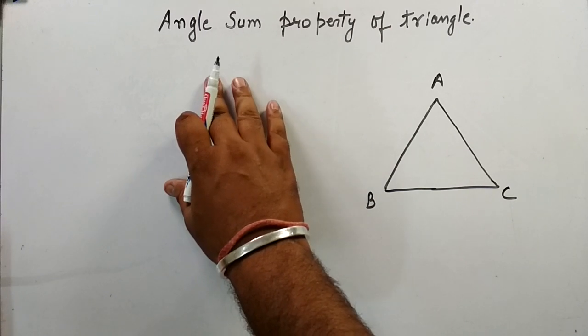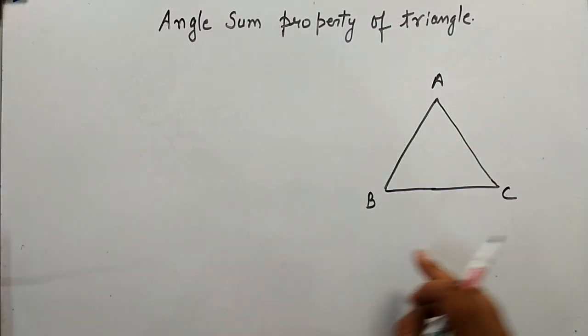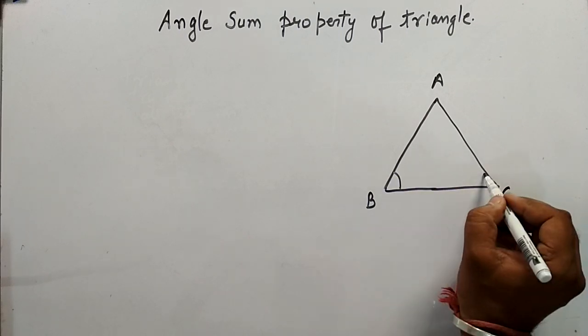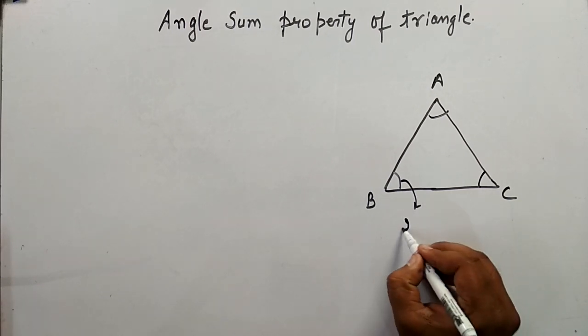So what is the angle sum property of a triangle? In this triangle ABC, if you look at here, this angle and this angle and this angle, these are known as interior angles.